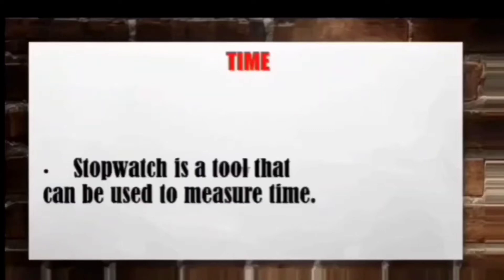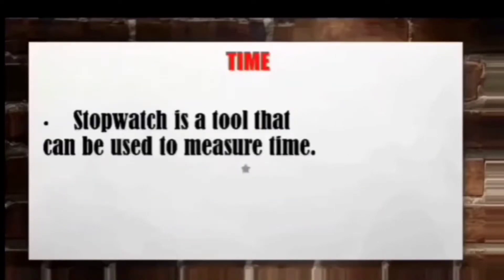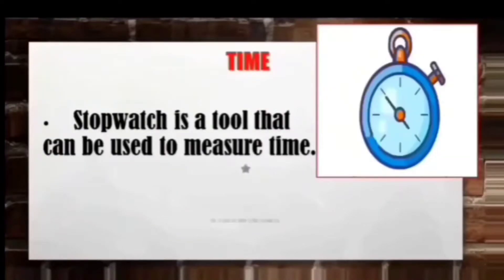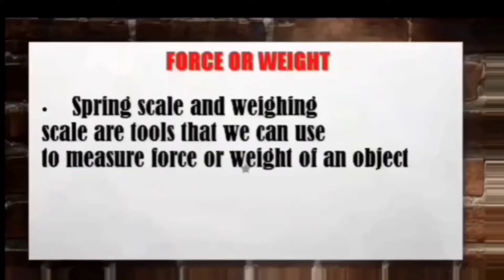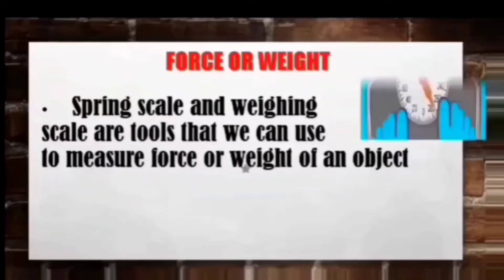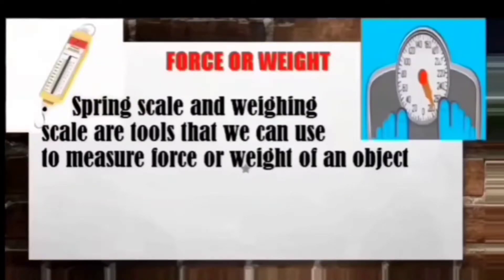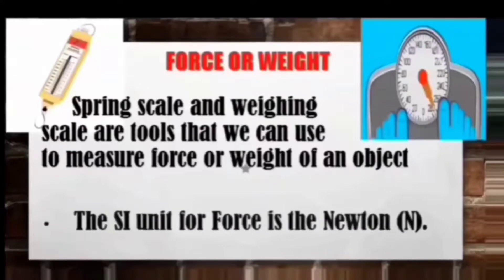Number two: time. A stopwatch is a tool that can be used to measure time, and the standard unit for time is the second. Number three: force or weight. A spring scale and weighing scale are the tools we can use to measure the force or weight of an object, and the standard unit of force is Newton.